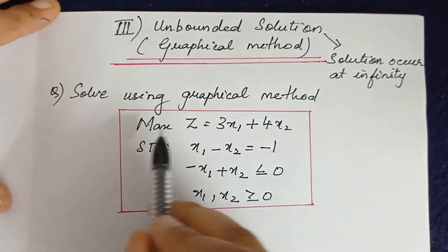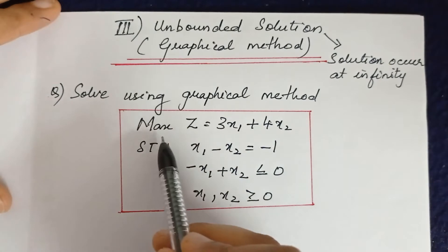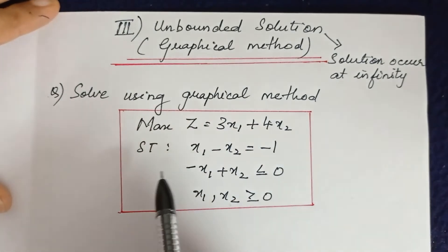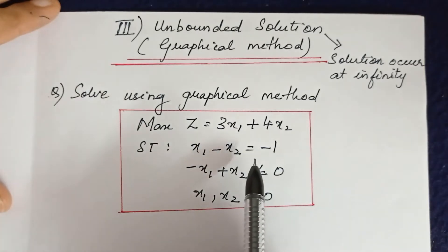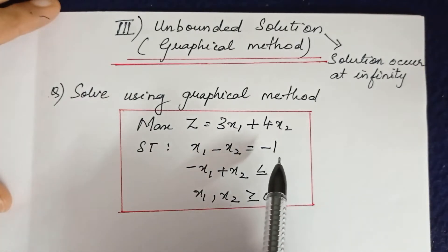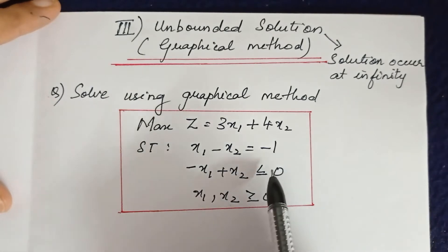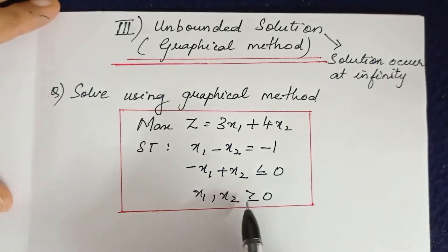The LPP given here has the objective function max z = 3x1 + 4x2, subject to the constraints: x1 - x2 = -1, and the second constraint -x1 + x2 ≤ 0. We also have the non-negativity constraints x1, x2 ≥ 0.